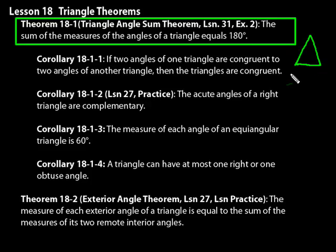The sum of the measures of the angles of a triangle equals 180 degrees. So if you have a triangle, and we'll call this triangle ABC, then angle A plus angle B plus angle C equals 180 degrees. So of course that's in Euclidean geometry on a flat surface.